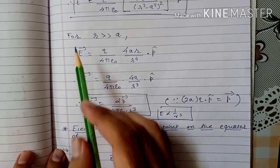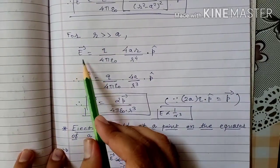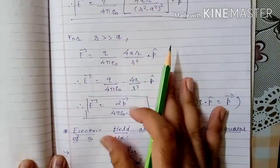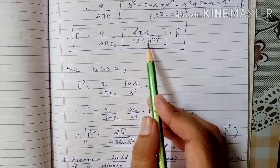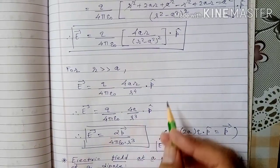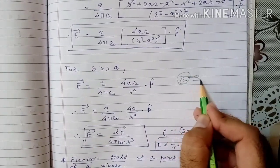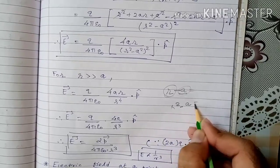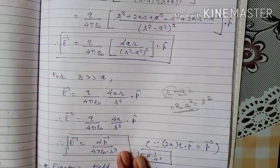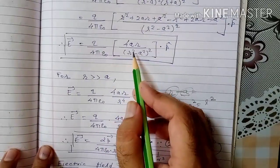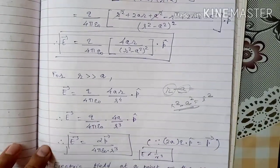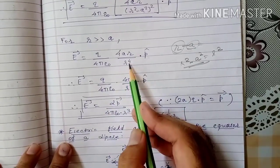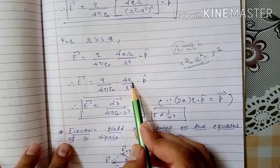For the special case where r is much greater than a, we can neglect a in comparison to r, so r² − a² ≈ r², and (r² − a²)² ≈ r⁴. The formula simplifies to E = (q/4πε₀) × 4a/r³ × p-cap.